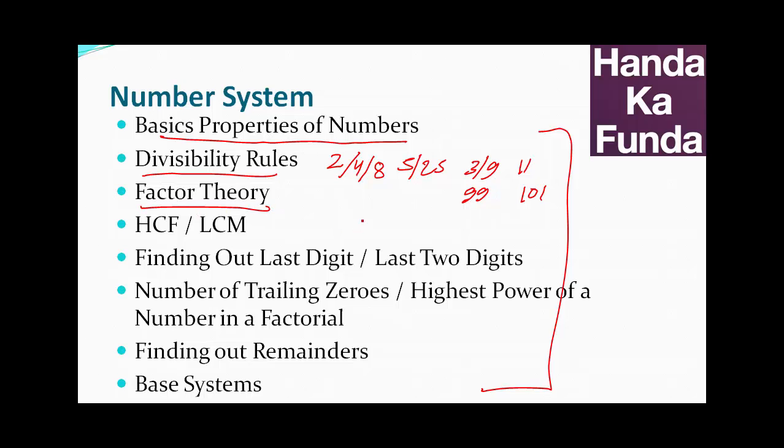Factor theory essentially deals with finding out the number of factors, how many of the factors are co-prime and how many ways you can express a number as a product of 2 factors or as a product of 2 co-prime factors. Let's say if you are given a number n, then how many of those factors of n are divisible by 12 or how many of those factors are divisible by 15. Stuff like that.